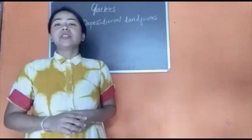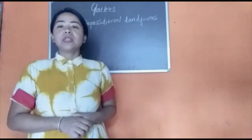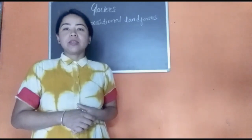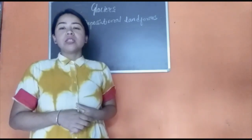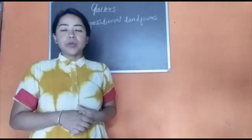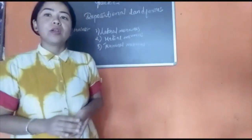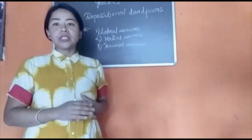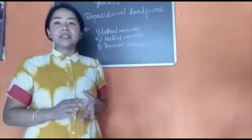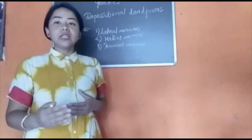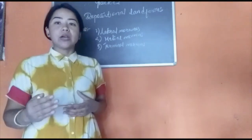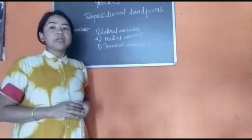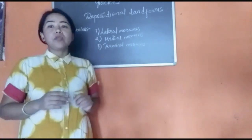Hello viewers, in the last class we learned about different erosional features formed by glacial movements. In today's class we shall focus on different depositional landforms formed by glaciers. On reaching the lowlands, glacier starts the work of deposition, and the point where the glacier ends is known as the snout. After reaching the snout, it does the work of deposition. The very first depositional feature we will look at is moraines.